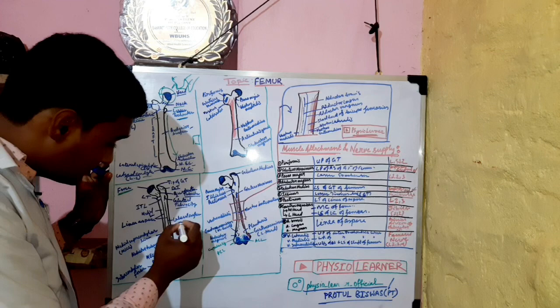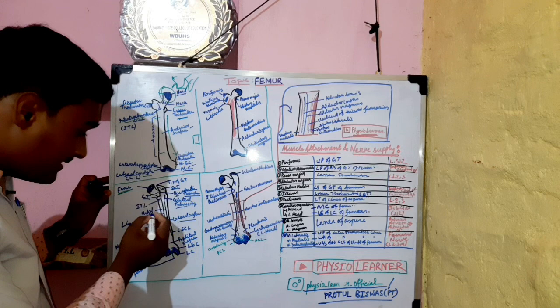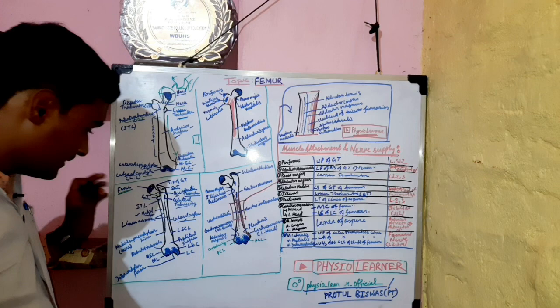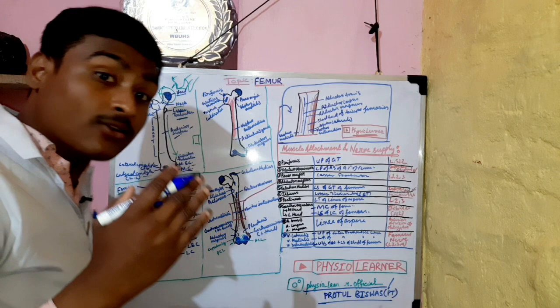We can also see the lateral trochanter, which is quite prominent. This is the medial surface, anterior surface, and lateral surface. We can also see the linea aspera, with its medial border and lateral border, and between them is the linea aspera.